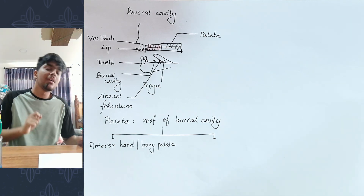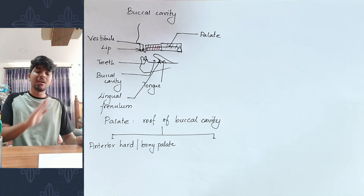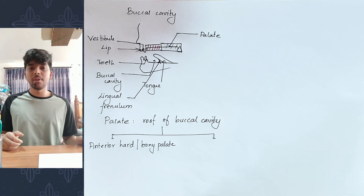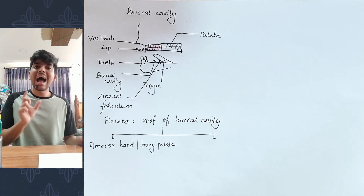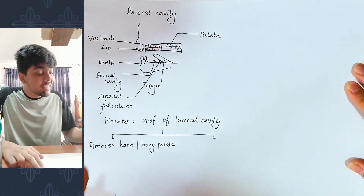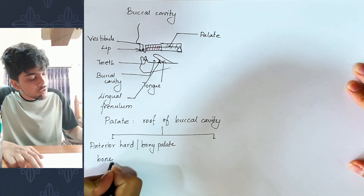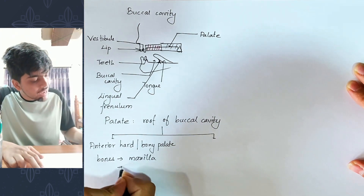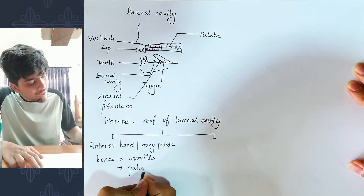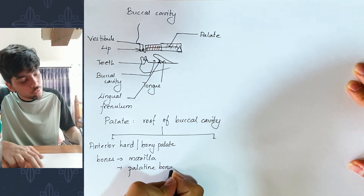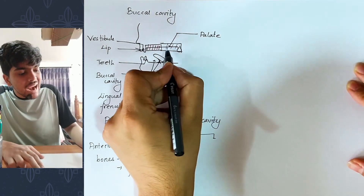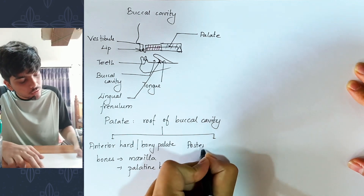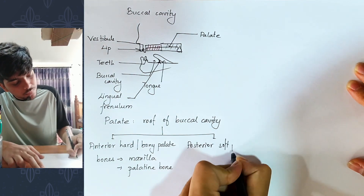The anterior palate is the hard palate because it is hard or bony. The hard palate is formed by the maxilla bone and the palatine bone. The posterior part is soft.